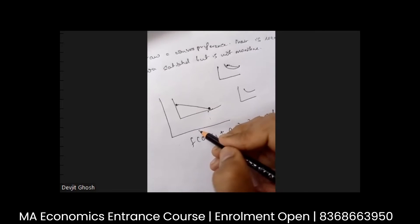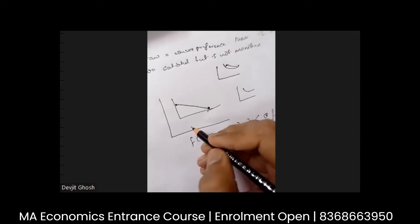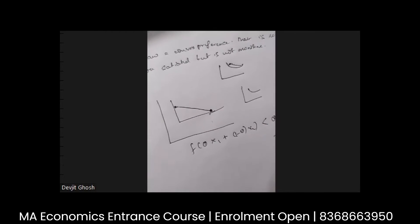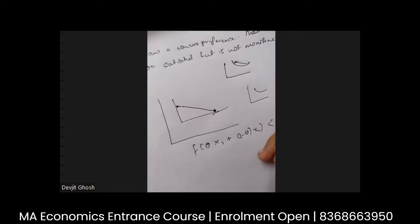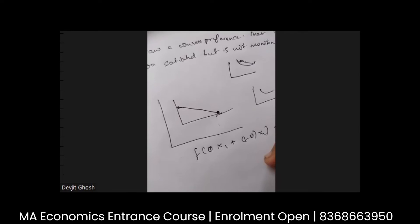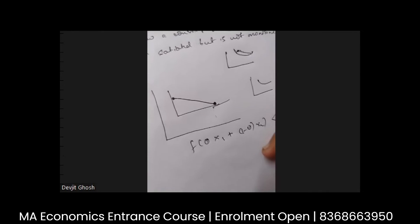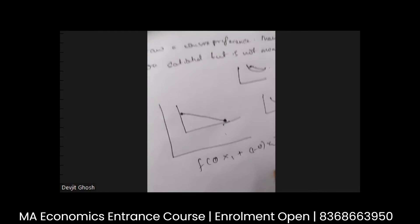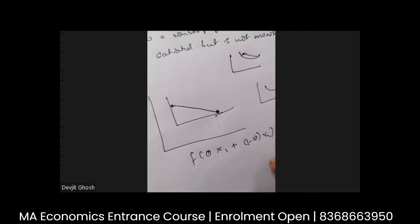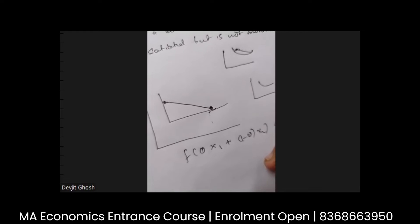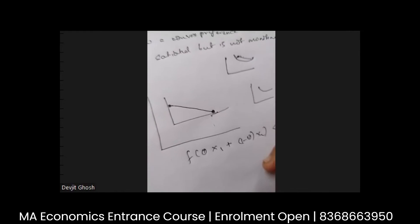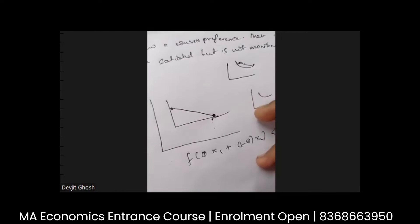Okay. And how do you prove for local non-satiation? Ma'am, what is that? If you can tell us local non-satiation. So local non-satiation means you take a point very, very close to any point and that point should be preferred over the initial point. So I take a point B very, very close to A, and I prove that B is preferred over A.